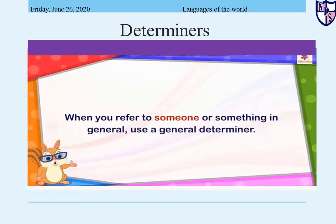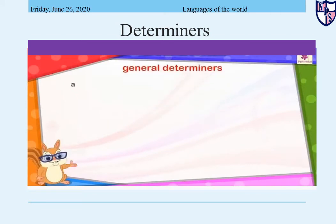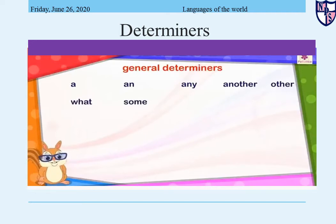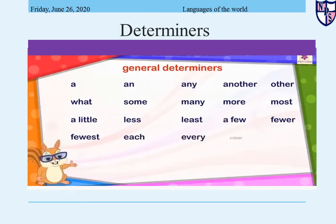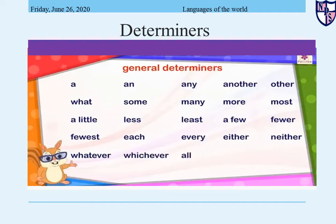When you refer to someone or something in general, use a general determiner. Some general determiners are: a, an, any, another, other, what, some, many, more, most, a little, less, least, a few, fewer, fewest, each, every, either, neither, whatever, whichever, all, both, half, one, two, and so on.